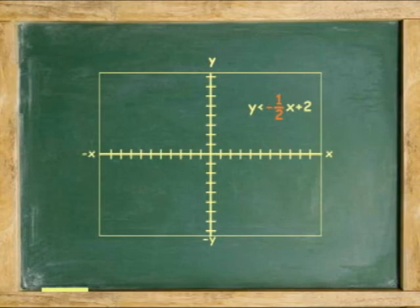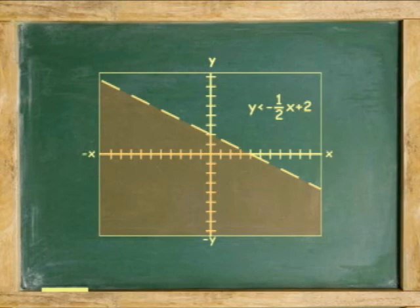We plot it starting at positive 2, from 2 down 1, to the right 2, and the solution is below the line, and the line is dashed because it is less than.